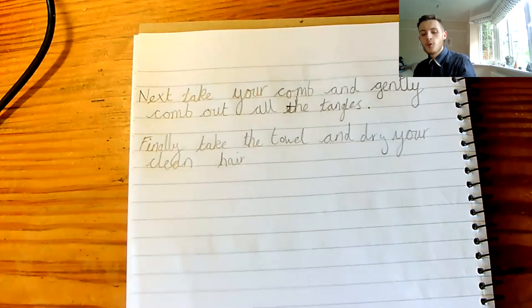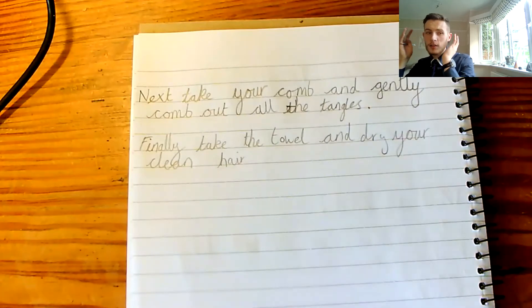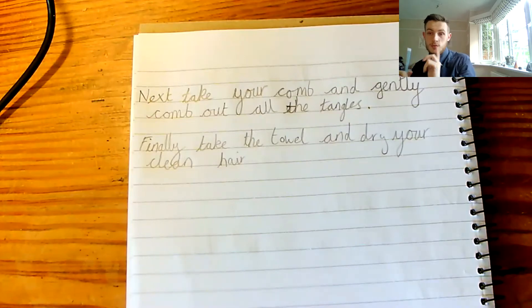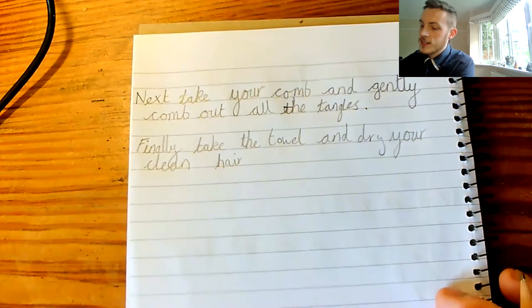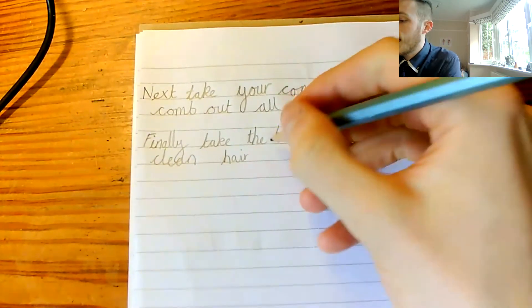Thoroughly means that you do it really, really well. So there's nothing left to do. I'm going to do it so well that I don't need to worry about doing it again. So, if I do something thoroughly, then I'm going to make sure that I don't need to go and dry my hair again later. Finally, take the towel and dry your clean hair thoroughly.